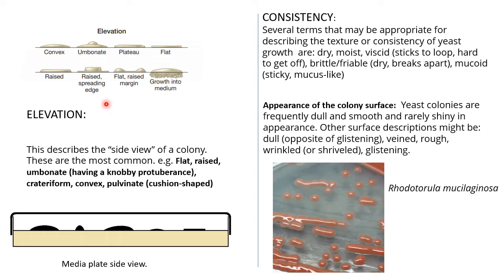Then comes consistency. Several terms that may be appropriate for describing the texture or consistency of yeast growth are: dry, moist, viscid — which is sticky and sticks to the loop — brittle or friable, meaning very dry and easily broken, and mucoid, which is very sticky and mucus-like. Mostly we get moist or dry to mucoid type of consistency in yeast cultures.